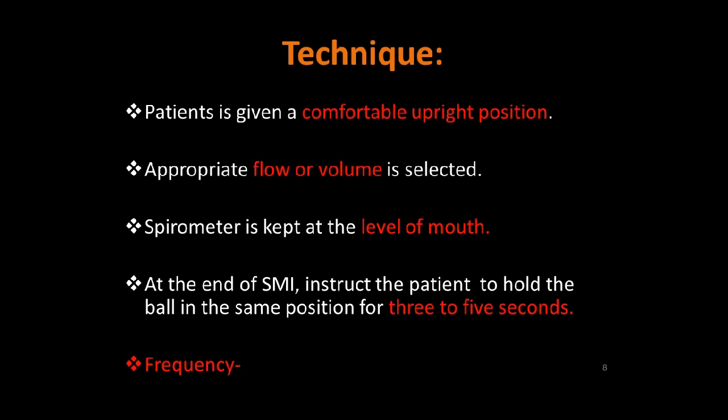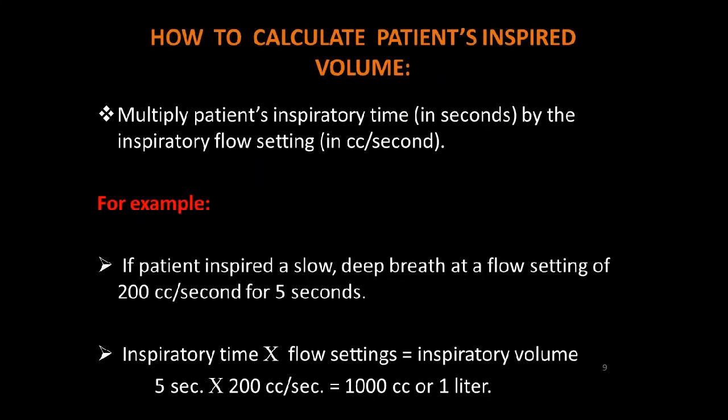To calculate the patient's inspired volume, multiply the patient's inspiratory time in seconds by the inspiratory flow setting in cc per second. For example, if the patient inspires a slow deep breath at a flow setting of 200 cc per second for 5 seconds, then: 5 seconds × 200 cc/second = 1000 cc, or one liter.